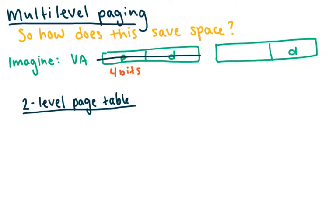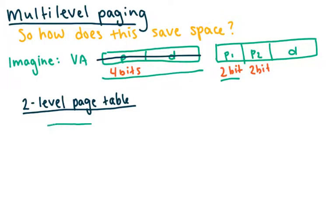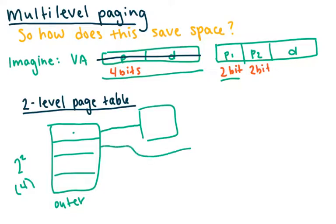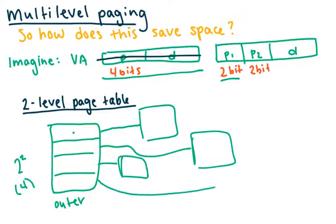Now if we move to a two-level page table, we split those four bits into p1 and p2 — say two bits each. Since p1 has only two bits, the outer page table can only have 2^2, or four entries. And each one of those four entries has an associated inner page table, which also has two bits to address into it, so each inner page table also has four entries.